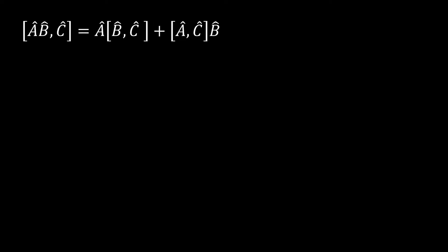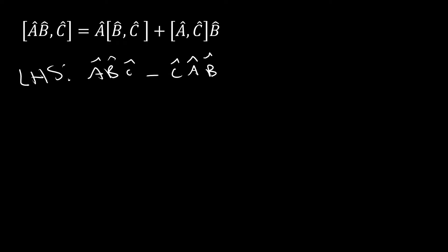Now moving on to the second part of part a. This is the second identity we're trying to prove, and we're going to take pretty much the same approach. Let's examine the left-hand side, which gives us simply A-hat·B-hat·C-hat minus C-hat·A-hat·B-hat. That's pretty straightforward. Now the right-hand side is a little more work.